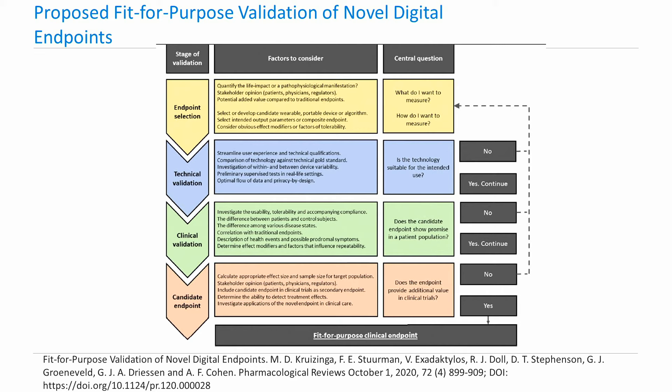One of the important considerations in the clinical validation stage is correlation with an existing disease metric. Correlating the novel endpoint with the traditional endpoint would be an important step. There can sometimes be suboptimal correlations and the reason for it should be determined. It could be that the novel endpoint is suboptimal, or it could be that the accepted gold standard being used is a suboptimal one, or it could be that these two endpoints are assessing two different aspects of the disease. One important recommendation by the authors is head-to-head comparison between devices to show comparability or to develop a conversion factor, which can help in combining data from multiple devices or from multiple studies.